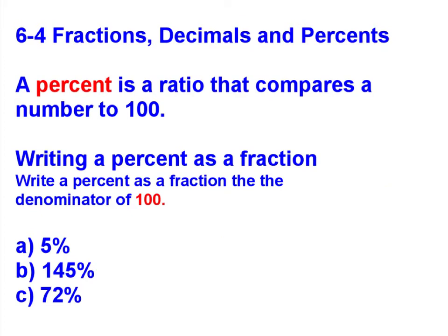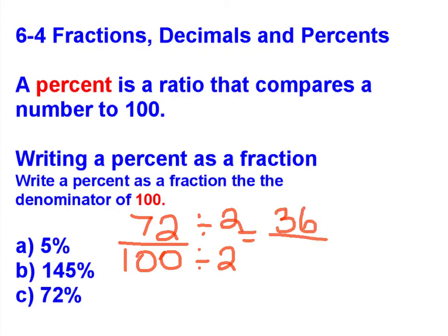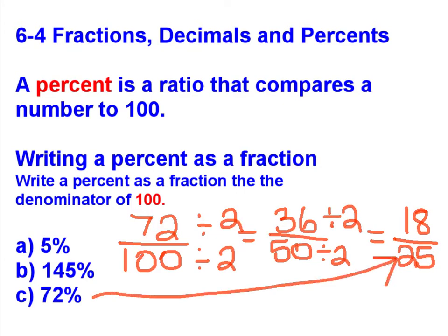Let's see how you did. You should have gotten, for letter C, 72 out of 100. Both of those numbers are divisible by 2 because they end in 0, 2, 4, 6, or 8. 72 divided by 2 is 36. 100 divided by 2 is 50. Looks like I'm not done yet. 36 divided by 2 and 50 divided by 2 would give me 18 out of 25. Check the notes on your paper. If you got 72% equals 18 out of 25, give yourself a little check. If not, fix your notes so that it shows the correct answer.